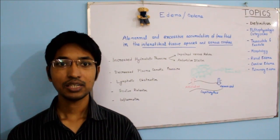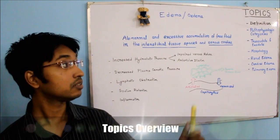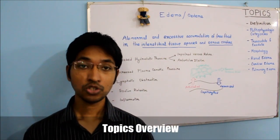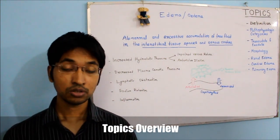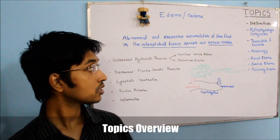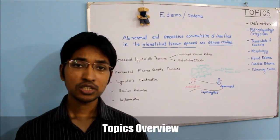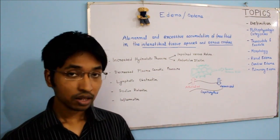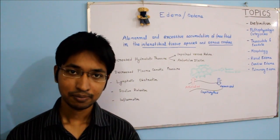Today's topic is on edema. This video will contain the definition of edema followed by the pathophysiological categories of edema. We will also talk about the concept of transudate and exudate and the morphology of edema. And we will finish our discussion today by discussing briefly renal edema, cardiac edema and pulmonary edema.